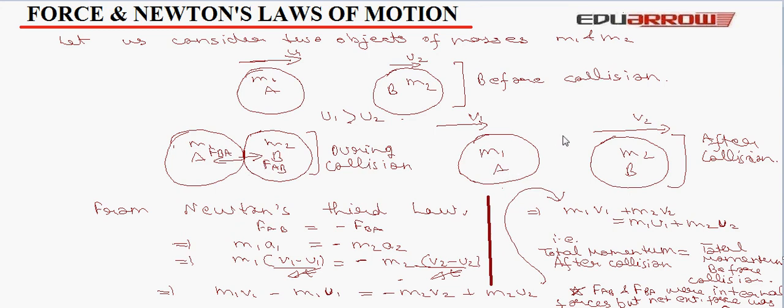Now, from Newton's third law, we know that F_AB is equal to minus F_BA. So, M1 A1 is equal to minus M2 A2, M1(V1 minus U1) upon del T, this is the A1, is equal to minus M2(V2 minus U2) upon del T. So, M1 V1 minus M1 U1 is equal to minus M2 V2 plus M2 U2. So, M1 V1 plus M2 V2 which is the total momentum after collision is equal to M1 U1 plus M2 U2 that is the total momentum before collision. So, this is the result, total momentum after collision is equal to total momentum before collision. Because F_AB and F_BA were internal forces and net external force was zero, hence momentum is conserved. And this is the principle of conservation of momentum.